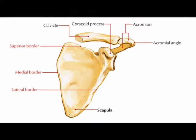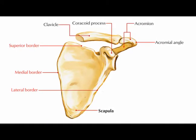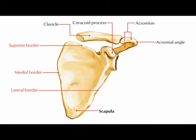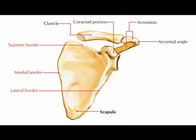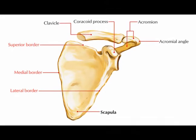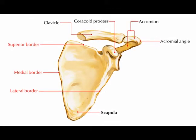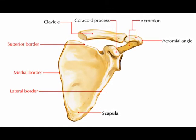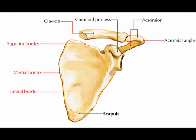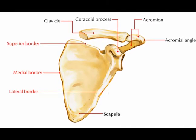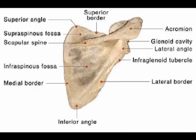The scapula has three borders: the superior border, the lateral border which is also known as the axillary border, and the medial border which is also known as the vertebral border because it is the border that is closest to the spine. There is also the superior angle, inferior angle, and lateral angle.